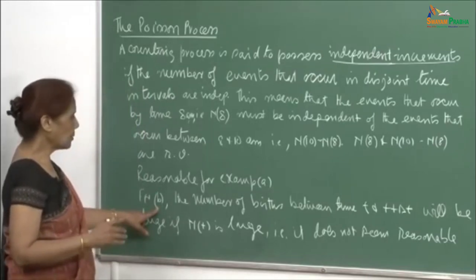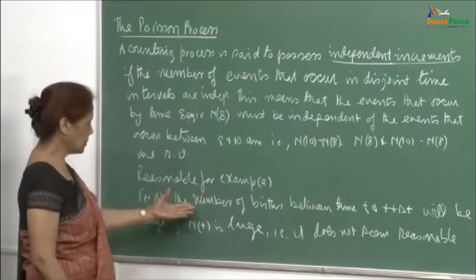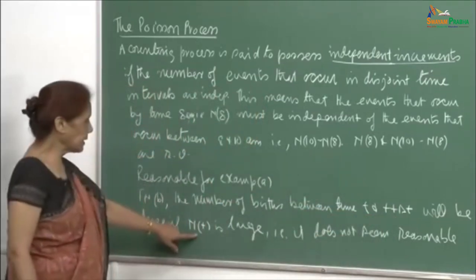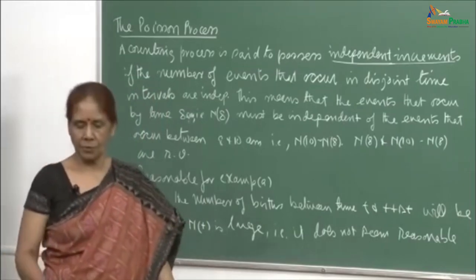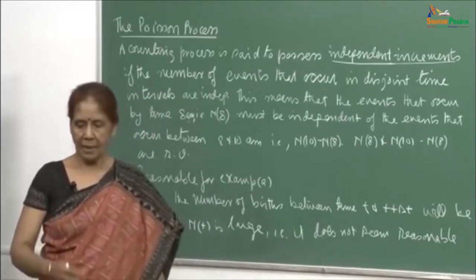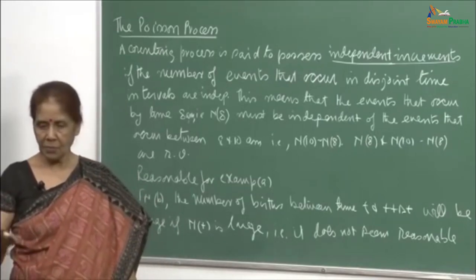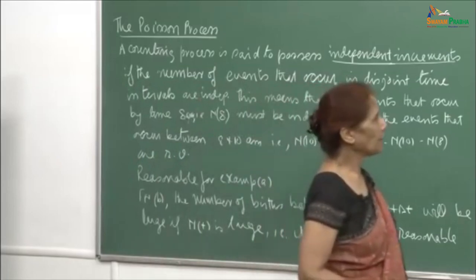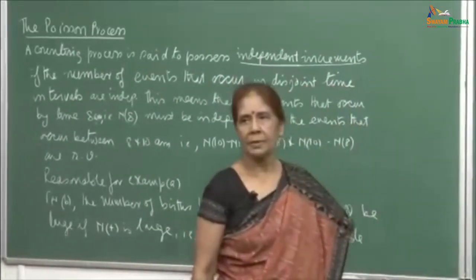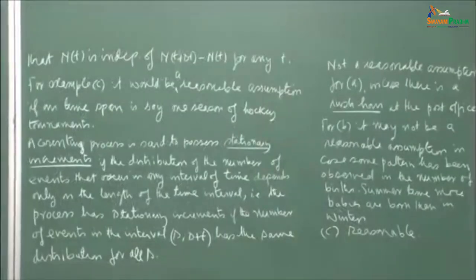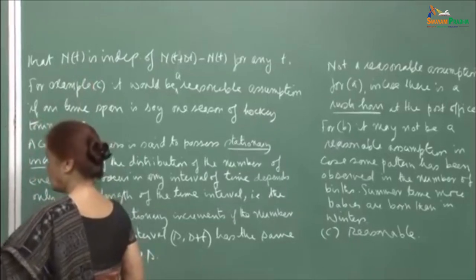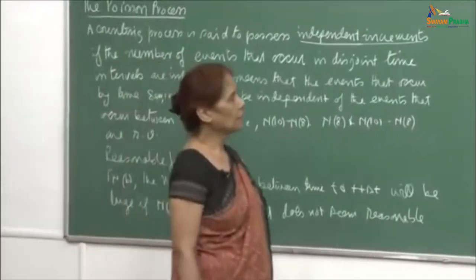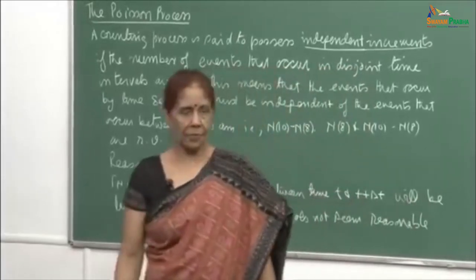For example (b), which is the number of births in a particular town, the number of births between time t and t plus delta t will be large if N(t) is large. If you are taking it over a long span, then at a particular time when the population is large, the number of births will be large. So it does not seem reasonable that N(t) is independent of N(t + delta t) minus N(t) for any t.